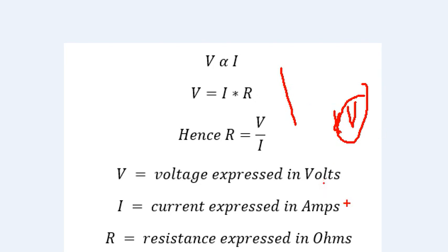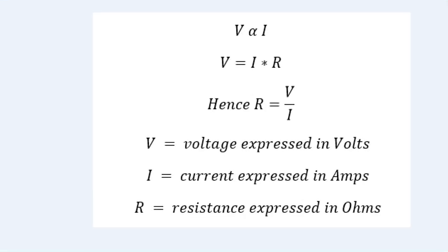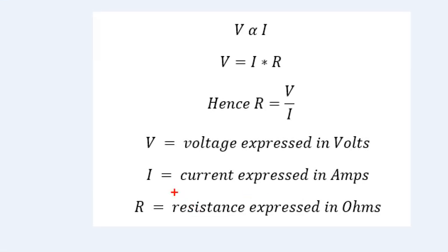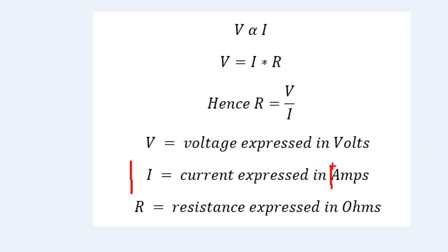This is the current. Current is the flow of electrons. We will see a video on current. The unit of current is Ampere, also called Amp. Amp is the name for the unit of current.